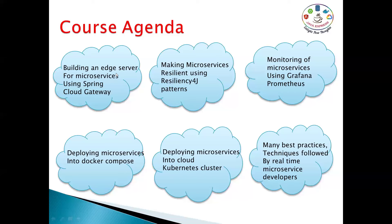When you have multiple services and one goes down, you need to handle fault tolerance — making microservices resilient. Using Resilience4j patterns like the circuit breaker pattern and retry pattern, we can achieve fault tolerance for our services.